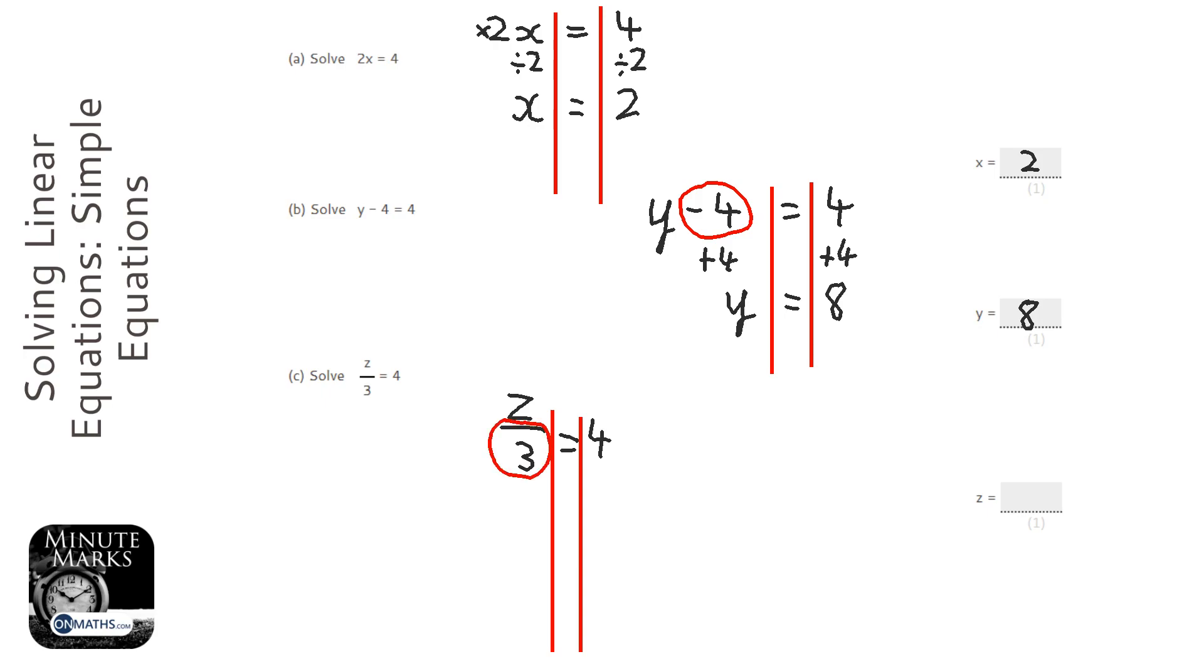So the opposite of divide by three is times three. So we have times three on both sides. So z equals four times three, which is twelve.